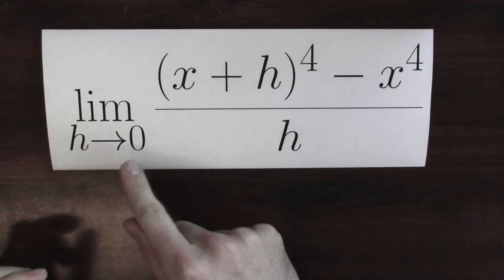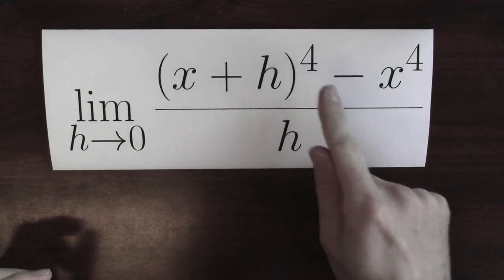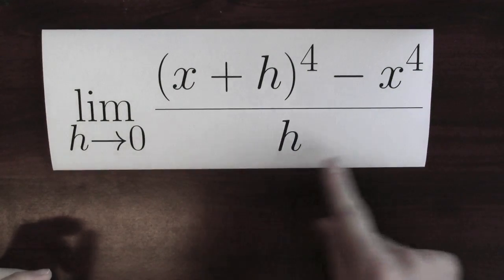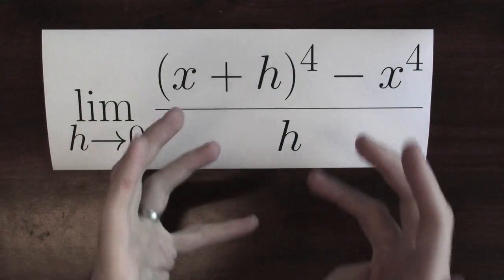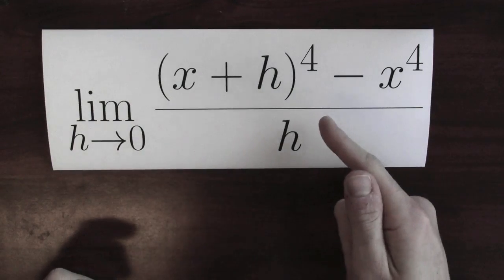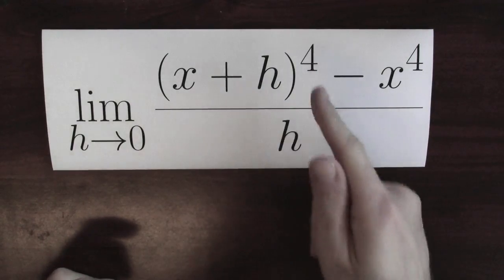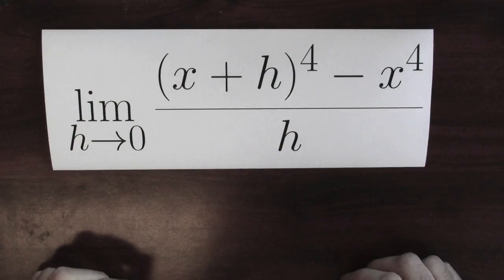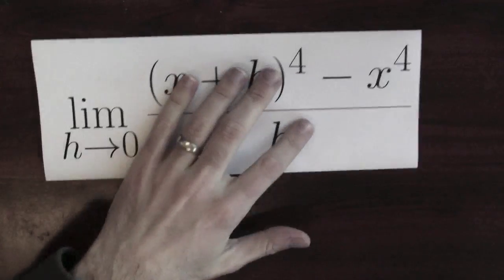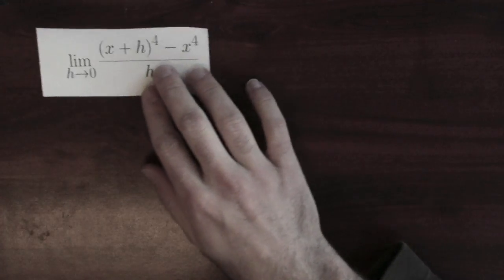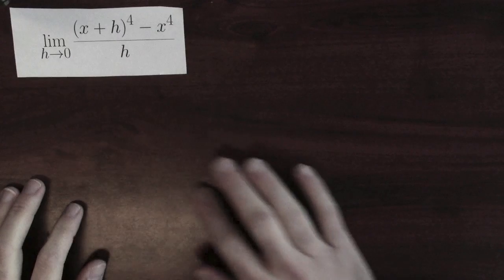I want to compute the limit as h approaches 0 of x plus h to the 4th minus x to the 4th over h. What is this computing? This is the limit of the difference quotient. This is the derivative of x to the 4th at the point x. Now, to proceed, I'm first going to make this a little bit smaller. This is a bit too big to work with. This is the limit I'm trying to calculate.